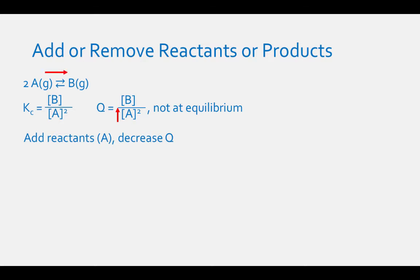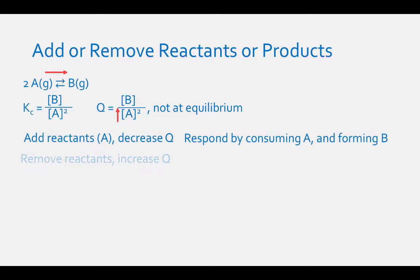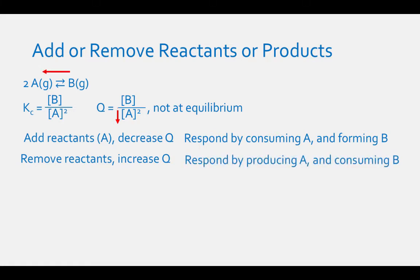The reaction will respond by consuming reactants A to form more products B. If you remove reactants, you will raise the value of Q because you are decreasing the denominator. Therefore, the reaction will shift to the left. The reaction will respond by producing reactants A and consuming products B.